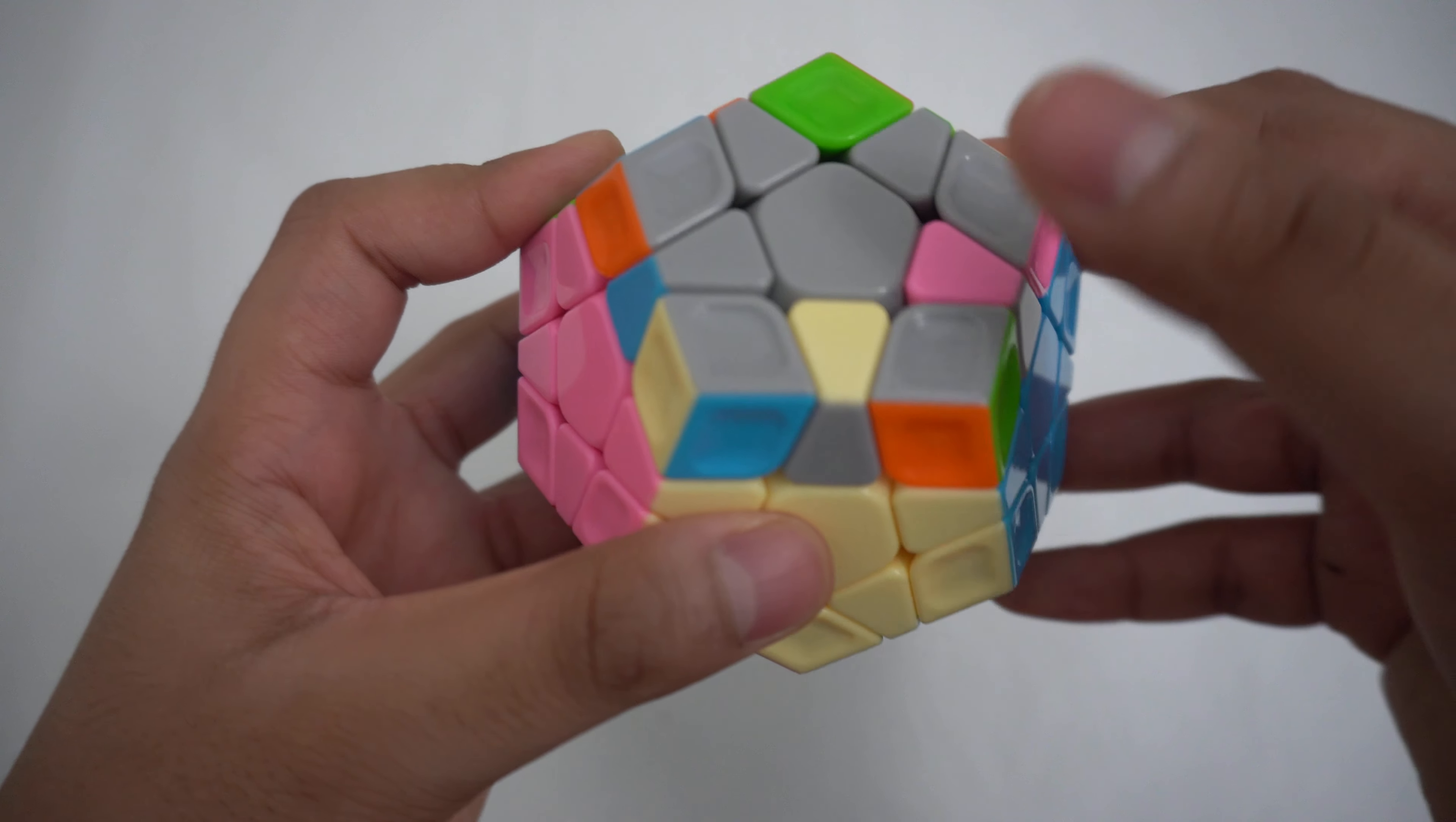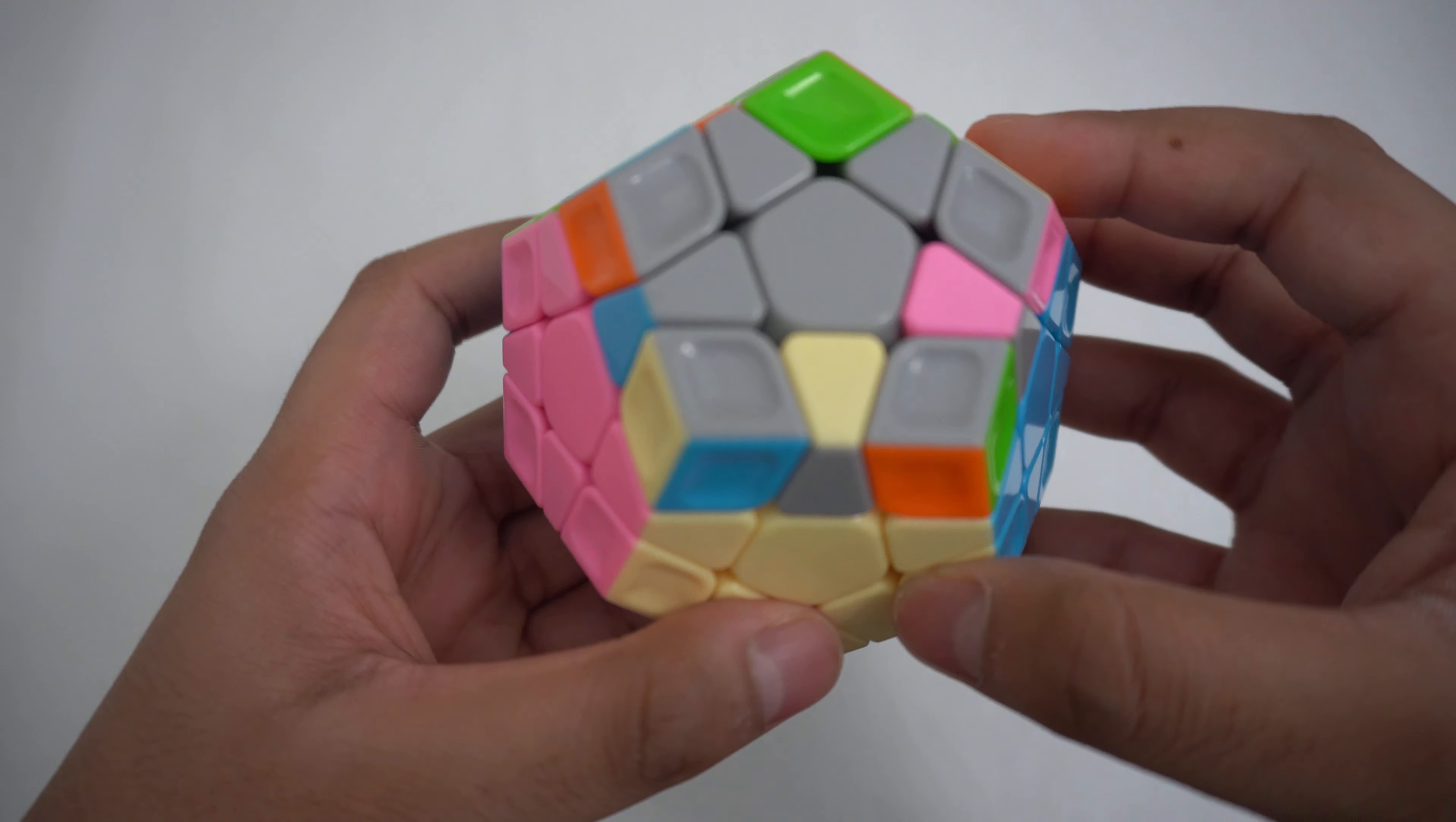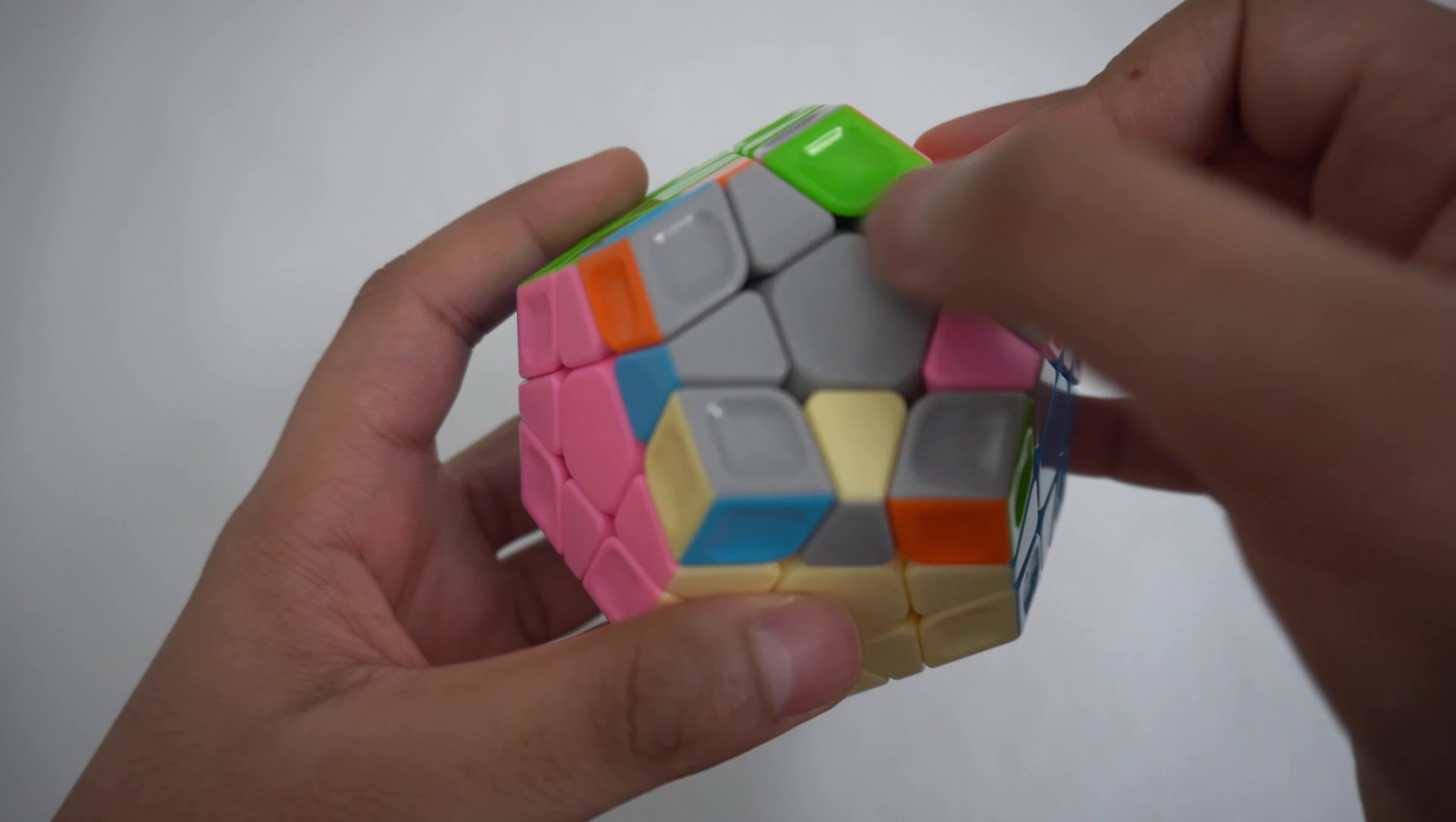The final step of solving the megaminx is to do the last layer. In my case, I need to solve the gray layer. First, I would make the gray star.